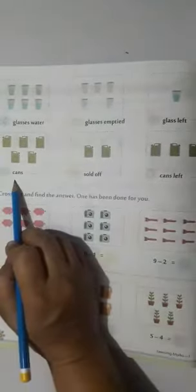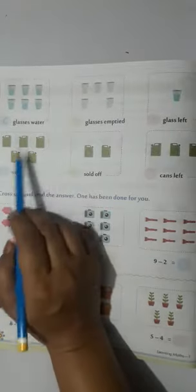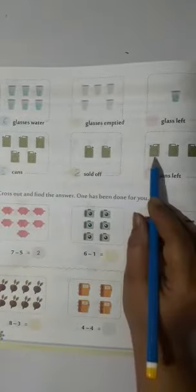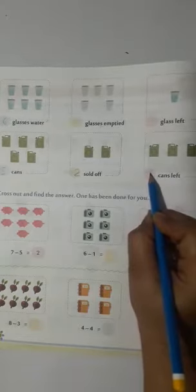In this picture: three, four, five - five cans. We write here five. And two cans are sold off. How many cans are left? Three. Five minus two is three.